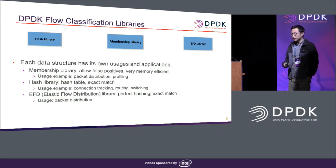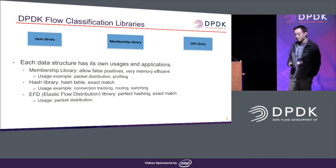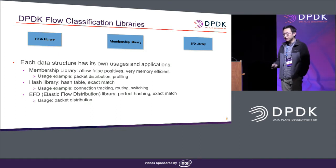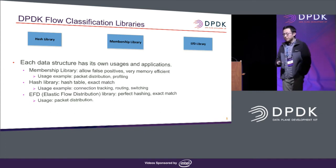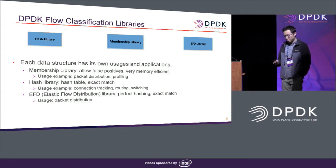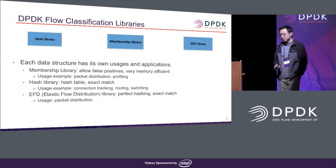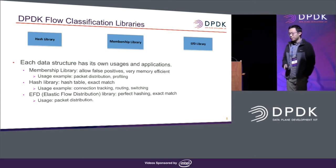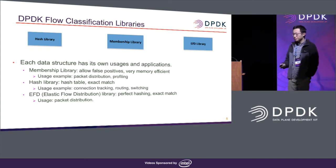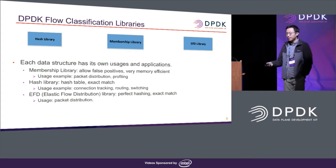We have been contributing to different libraries in recent years from Intel Labs, including the hash library, membership library, and EFD library. They all do classification but with different use cases and purposes. For example, the membership library allows false positives but is very memory efficient, so you can use it for use cases that don't need 100% accuracy, such as profiling or distribution. The hash library is a straightforward hash table library for net table or flow table. EFD is another library doing exact match — compared to the hash library, it has higher memory efficiency and faster lookup speed, but slightly slower insertion speed.